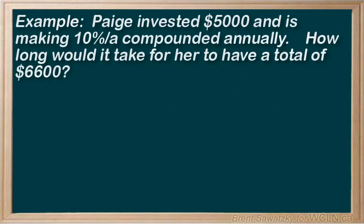Example: Paige invested $5,000 and is making 10% per annum compounded annually. So how long would it take for her to have a total of $6,600? Let's resort to our compound interest formula. In this case, we have to rearrange our equation to solve for t.